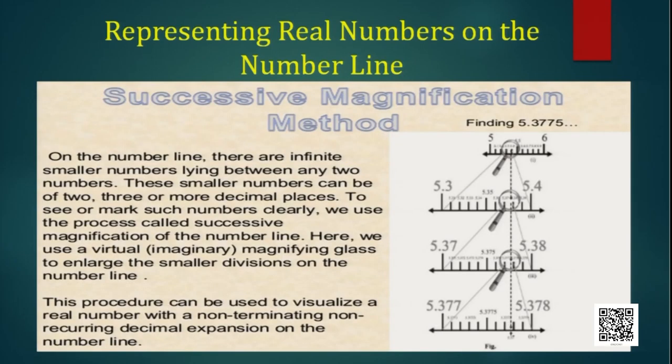On the number line, there are infinitely many smaller numbers lying between any two numbers. These smaller numbers can have 2, 3, or more decimal places. To see or mark such numbers clearly, we use the process called successive magnification of the number line, where we use a virtual magnifying glass to enlarge the smaller divisions. This procedure can be used to visualize a real number with a non-terminating, non-recurring decimal expansion on the number line.